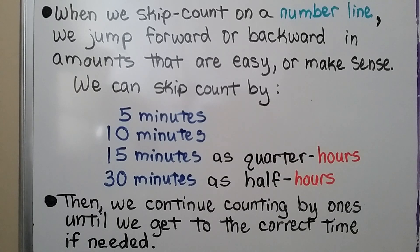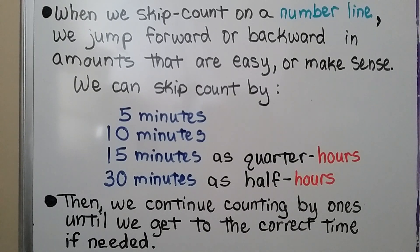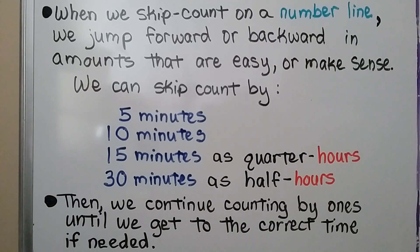When we skip count on a number line, we jump forward or backward in amounts that are easy or make sense. We can skip count by 5 minutes, 10 minutes, 15 minutes as quarter hours, or 30 minutes as half hours. Then we continue counting by ones until we get to the correct time, if needed.